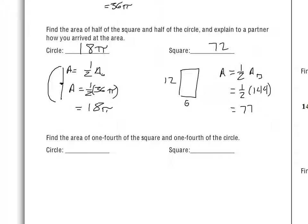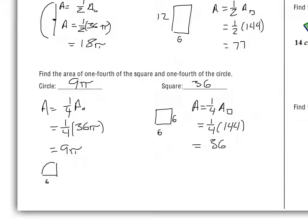The next one says: find one-fourth of the square and one-fourth of the area of the circle. Go ahead and do that on your own and pause the video. We should come up with 9π — that would be one-fourth of 36π — and 36, which is one-fourth of 144.